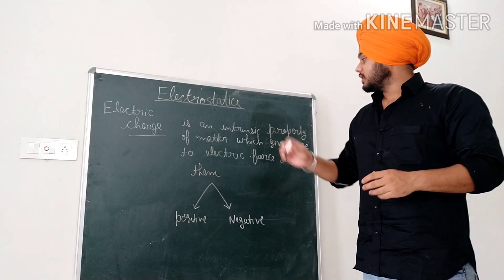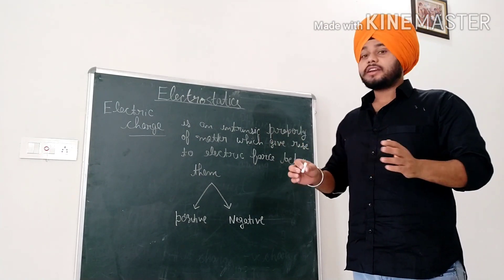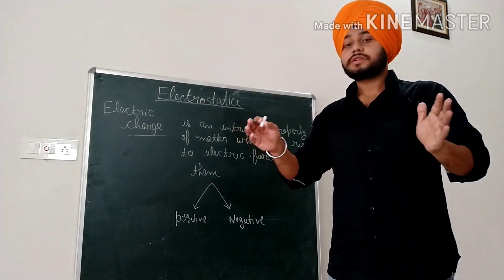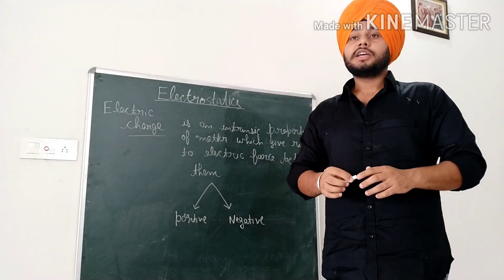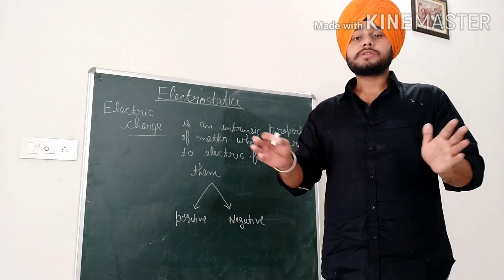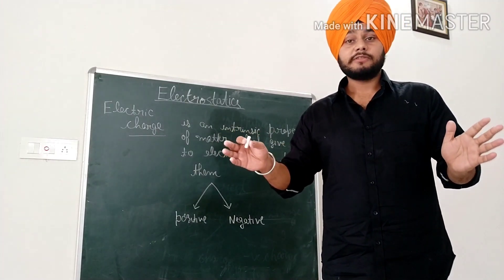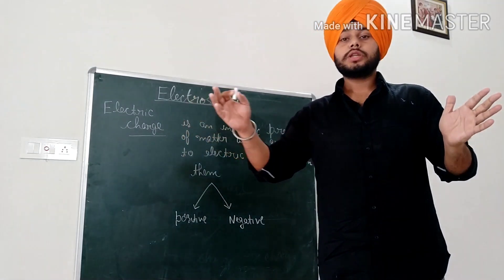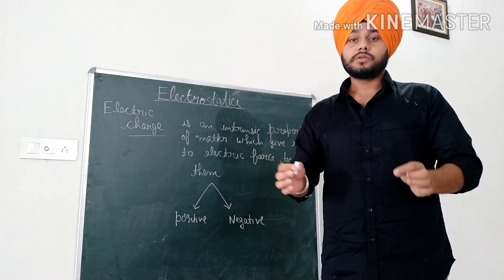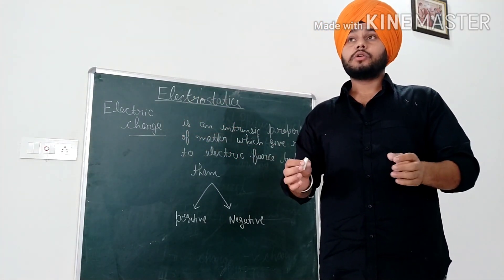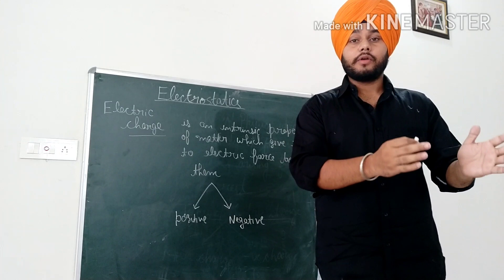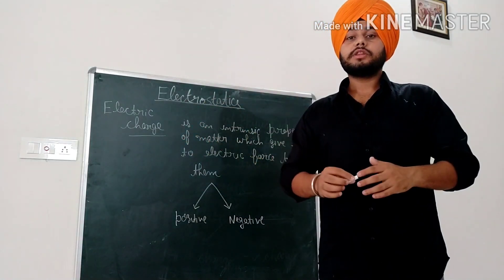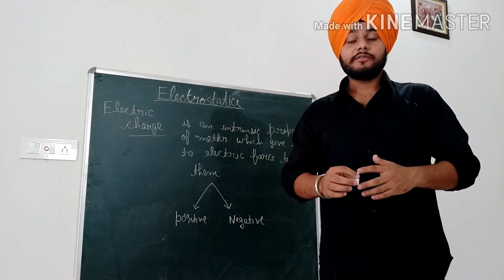What is electric charge? Electric charge is the property by which two charged objects exert force on each other. Two similar charges — for example, two protons — exert a force on each other. One is a proton and the other is a proton; the force between them is a repulsive force.